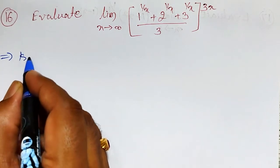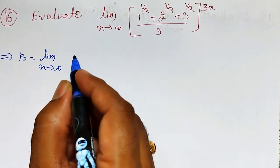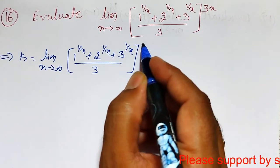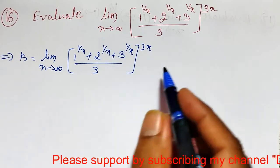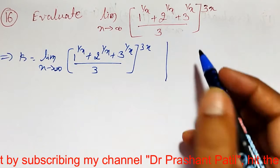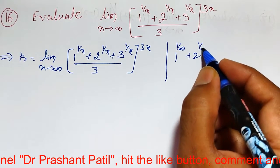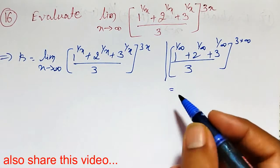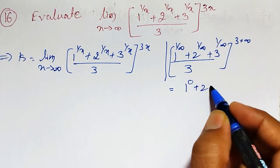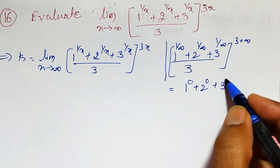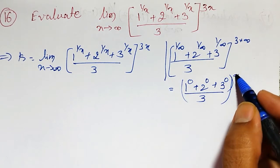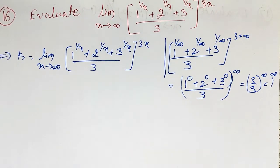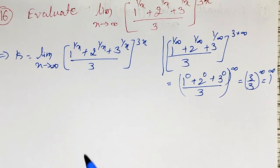First, let me call this limiting value as k. So k equals the limit as x tends to infinity of ((1^(1/x) + 2^(1/x) + 3^(1/x)) / 3)^(3x). As x tends to infinity, 1/x → 0, so we get (1 + 1 + 1)/3 raised to infinity, which is 1 raised to infinity. The given indeterminate form is the 1^∞ form.